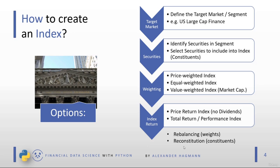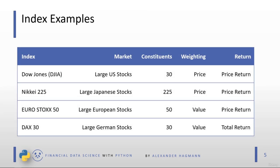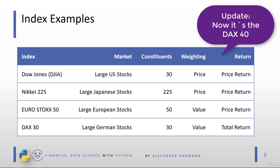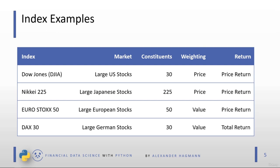As this is a coding course, we will focus on the technical steps — weighting and return. Here are some index examples: the Dow Jones covers 30 large US stocks with price weighting and is typically referred to as a price-return index (though a total return version also exists). The Nikkei 225 covers 225 large Japanese stocks with price weighting and is also a price-return index. The Eurostoxx 50 and DAX 30 are value-weighted indexes, and when people talk about the DAX 30, they typically mean the total return index.